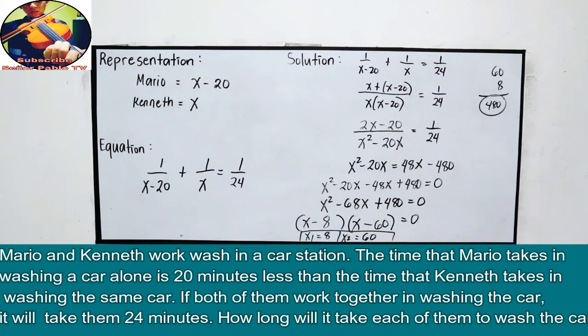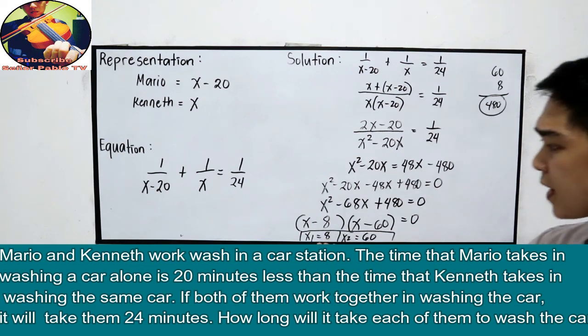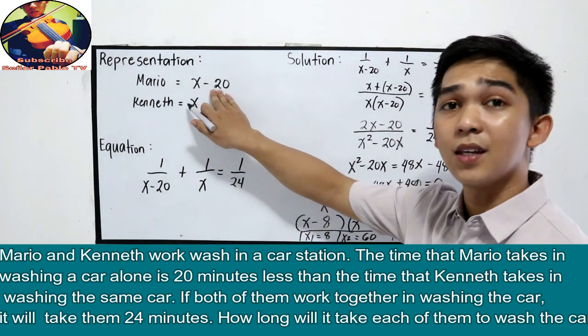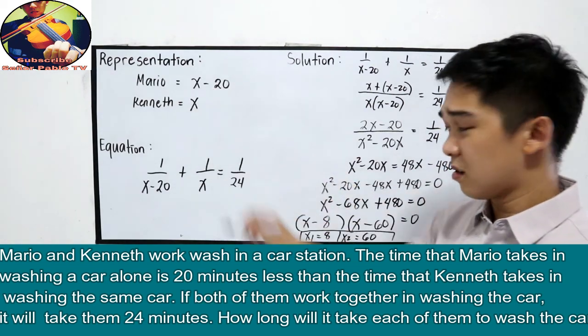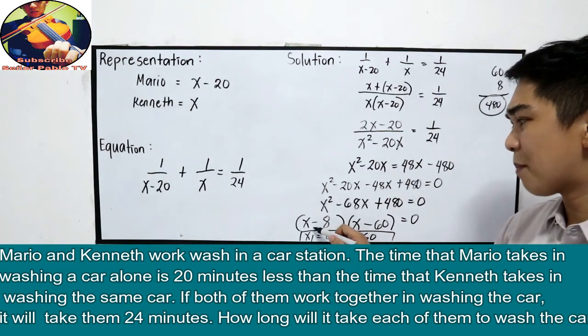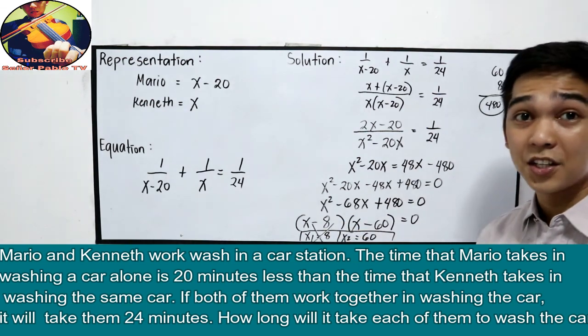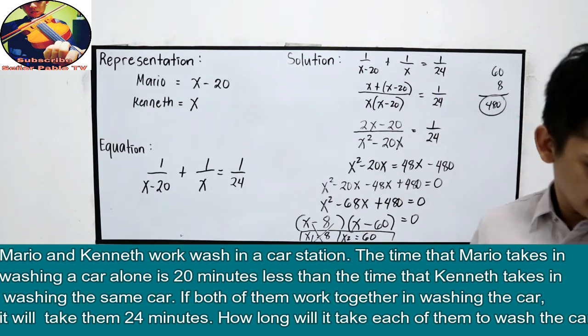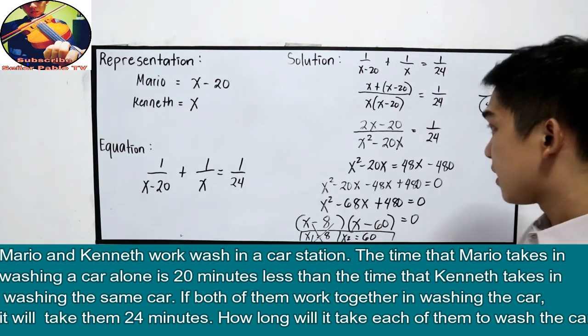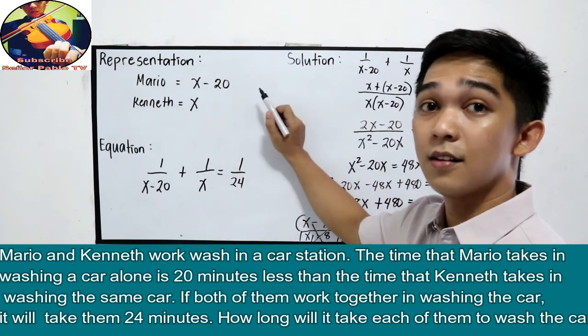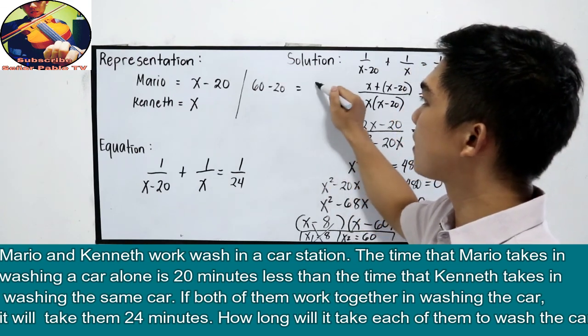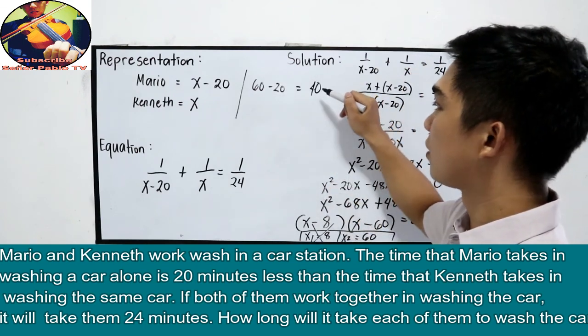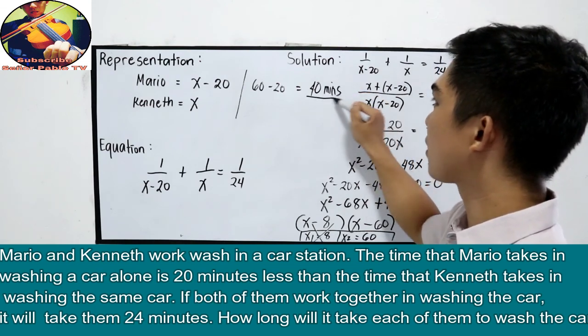So, balikan natin. Ayun na ba yung kukuin natin dyan? Si 8 or si 60? So, kapag kinuha natin si 8, 8 minus 20, that is negative 14. Wala naman tayong negative hours. So, hindi applicable si 8. So, dapat mas mataas. So, hindi natin siya ico-consider. Next. 60. 60 minus 20. That is 40. So, 40 minutes. Pasok.